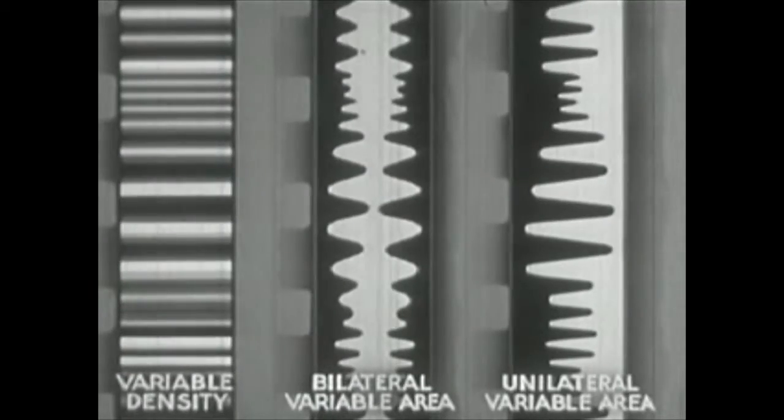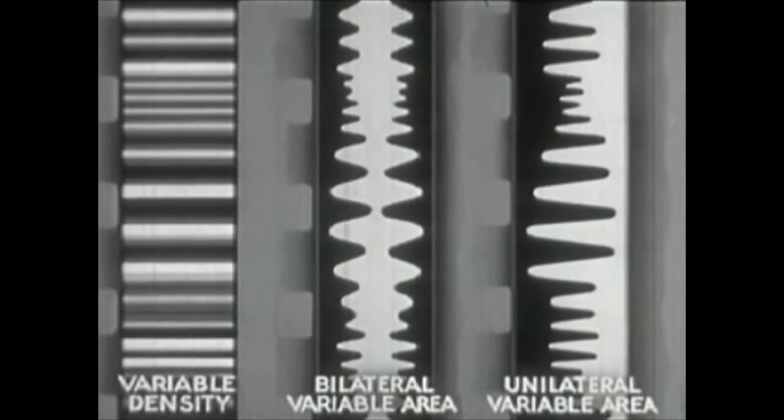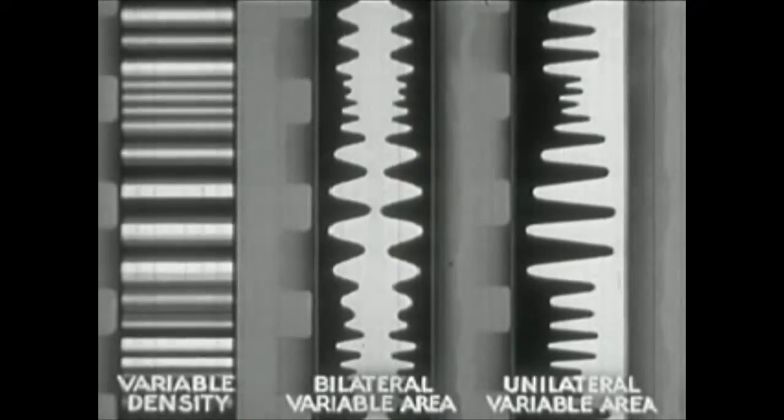All of these sound records contain photographic records of light variations corresponding to the pressure variations in the original sound. If either a variable area or a variable density sound record is run past a narrow line of light from a fixed source, and the light after passing through the film is visually observed, the amount of light reaching the observer is constantly varying from instant to instant. If the eye were capable of quantitatively measuring the light, it would see that the amount of light from either sound record varies in exactly the same way.